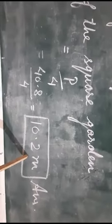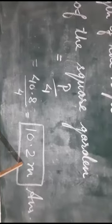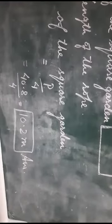That will be the length of each side of the square garden. So students, you do this sum also in your notes copy. If you want to draw the diagram you can, otherwise it is not compulsory. That's all for today.